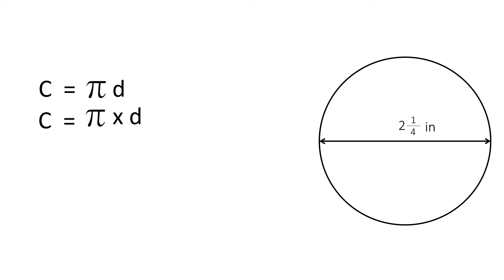However, sometimes your teacher may ask you to do it in a fraction format. So, the fraction formula for pi, or something equivalent to pi, will be 22 over 7. Always remember this fraction. And we multiply it by 2 and 1 fourth inches.